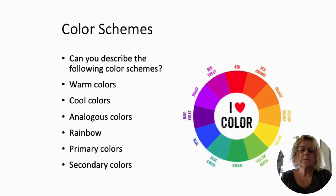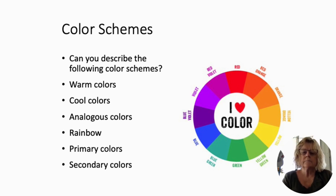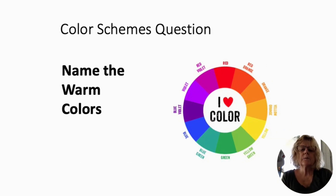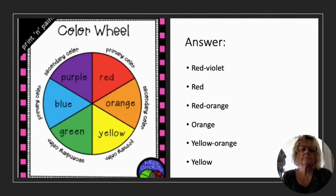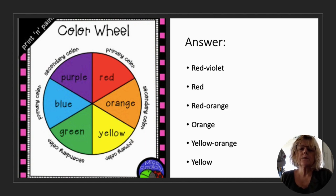Fifth grade students will be studying color schemes and describing colors, and they'll be able to answer the questions below while studying the Faith Ringgold quilt and black history. Can you describe the following color schemes? Students will also be asked to name the warm colors, study the color wheel, and answer: which colors do you use to make red-violet, red-orange, and yellow-orange?